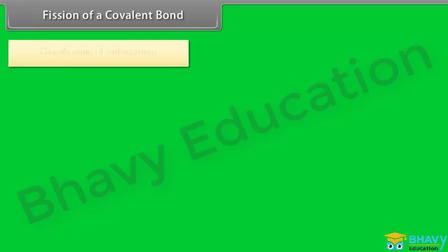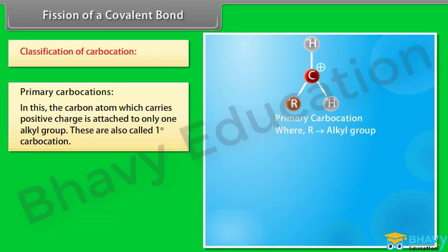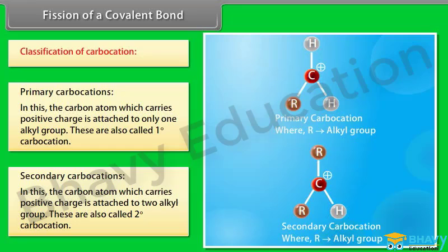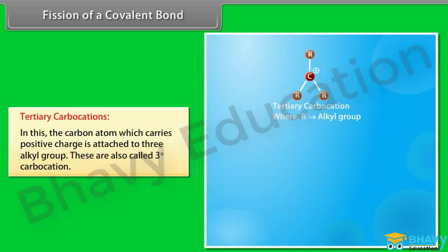Classification of carbocations: In primary carbocations, the carbon atom carrying the positive charge is attached to only one alkyl group — also called first-degree carbocations. In secondary carbocations, the carbon atom is attached to two alkyl groups — also called second-degree carbocations. In tertiary carbocations, the carbon atom is attached to three alkyl groups — also called third-degree carbocations.